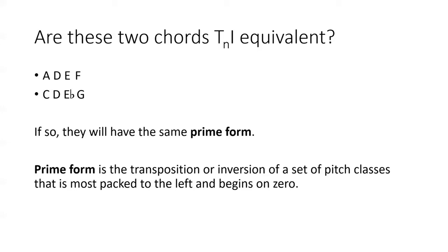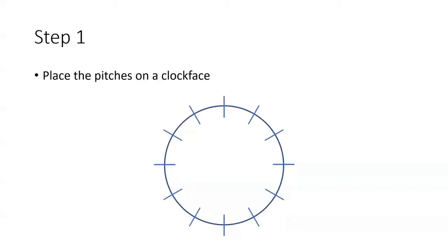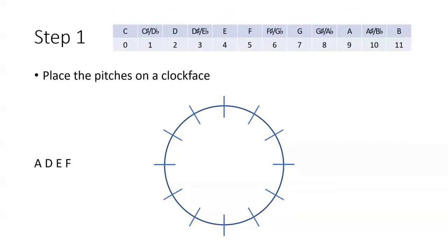Let's start by finding the prime form of the first set, ADEF. The first step is to place the pitch classes on a chromatic clock face. Let's turn these note names into pitch class integers, starting with A. A is 9, so we'll put it at 9 o'clock on the clock face. D is 2, so that goes at 2 o'clock. E is 4, so we'll place that two hours later on the clock. And F is 5, so one more dot will go on the next tick mark.